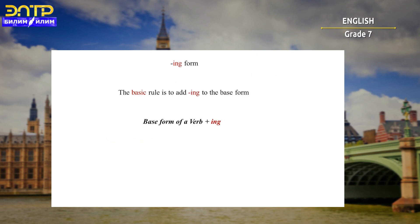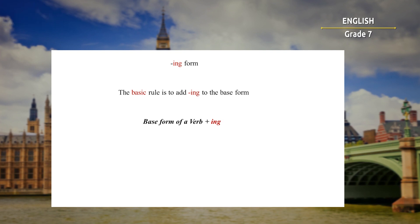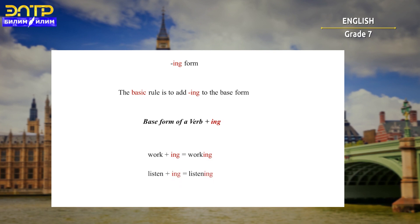Now let's move on. I want to explain the rules of past continuous and the ING form. The basic rule is to add ING to the base form. The formula is: base form of a verb plus ING. For example, work plus ING will become 'working', listen plus ING will become 'listening'.